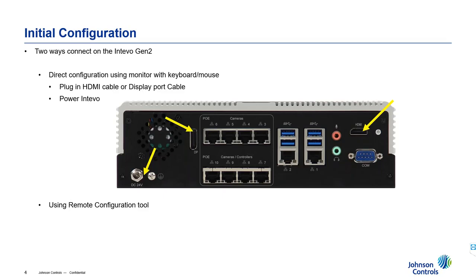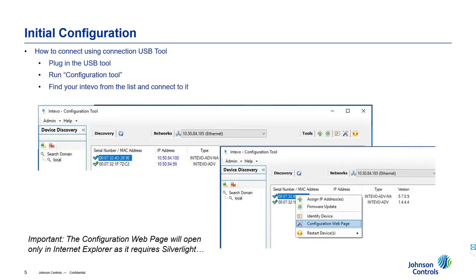If you put the Interval in a server room, you most likely won't have a monitor, screen, KVM switch, or any of the above. In that case, you can use a remote configuration tool. This tool is installed on any computer other than the Interval and allows you to configure and find Intervals — similar to how the Illustra camera finder tool works. It comes in the same box with all your adapters, and includes several tools, the most useful being the configuration tool which lets you find Intervals on the network.